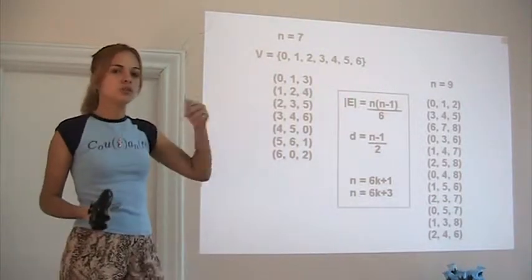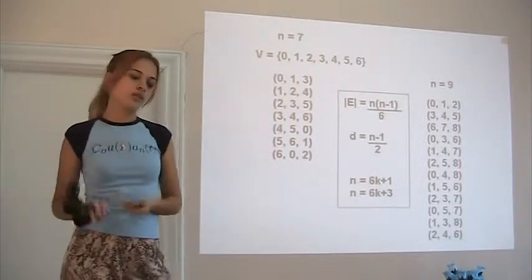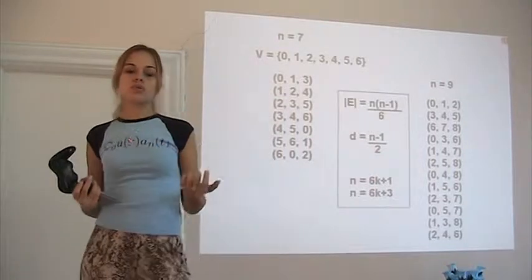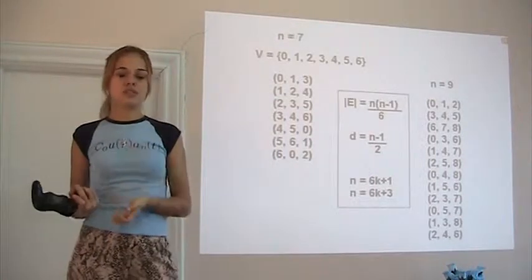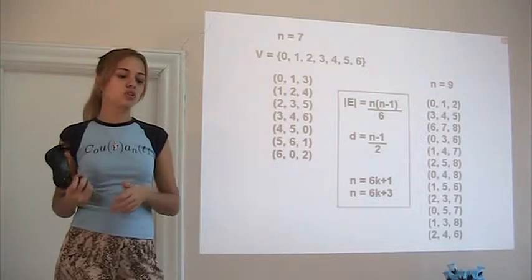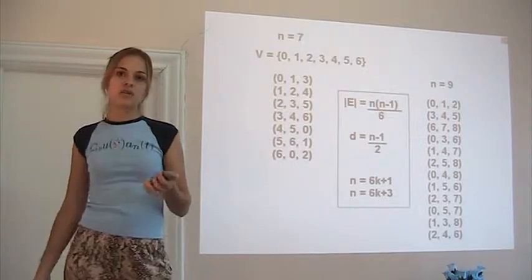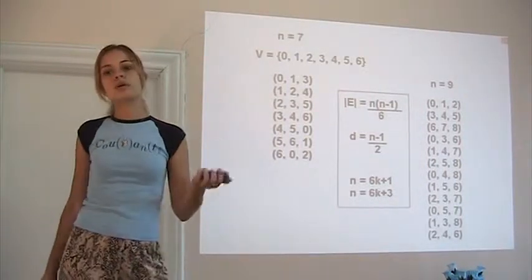For example, at n equals 9, if you look at the first three lines, the edges are (0,1,2), (3,4,5), and (6,7,8). So that makes a packing. Not only that, it's a packing that uses all of the vertices. So we call that a perfect packing.